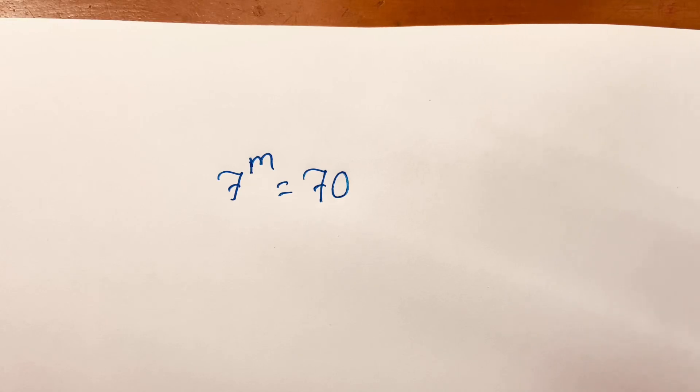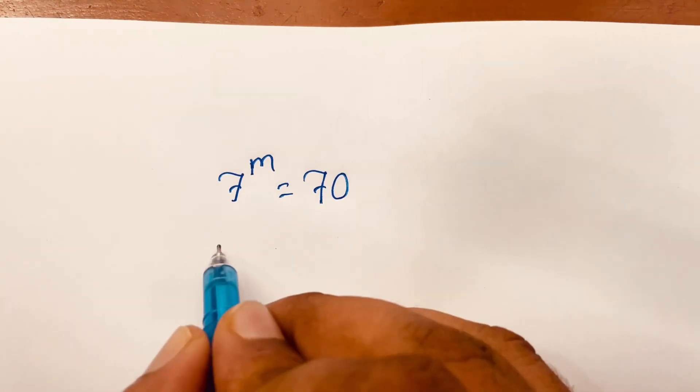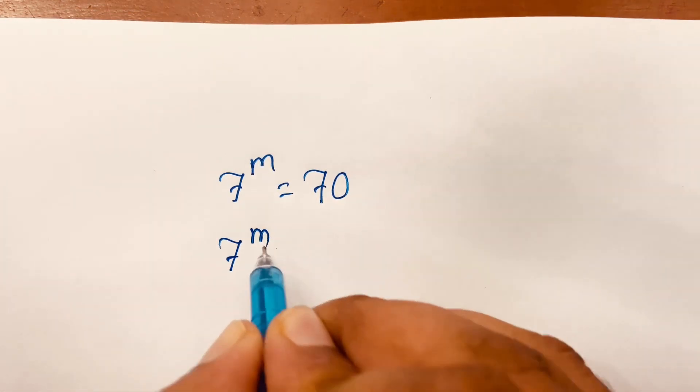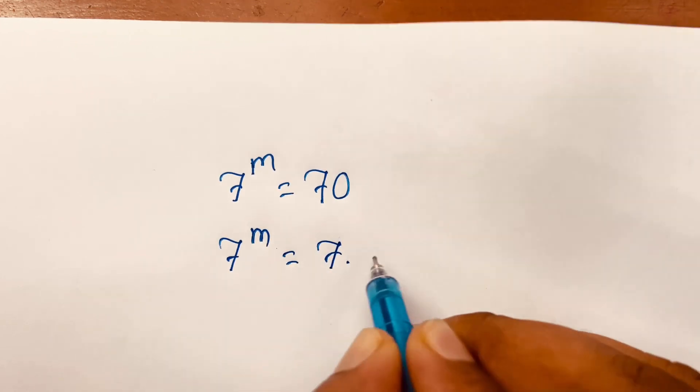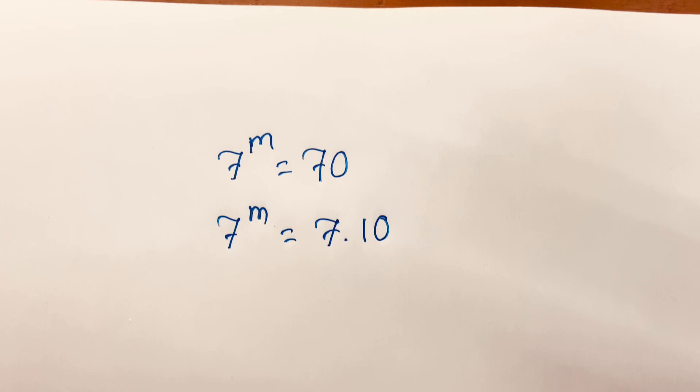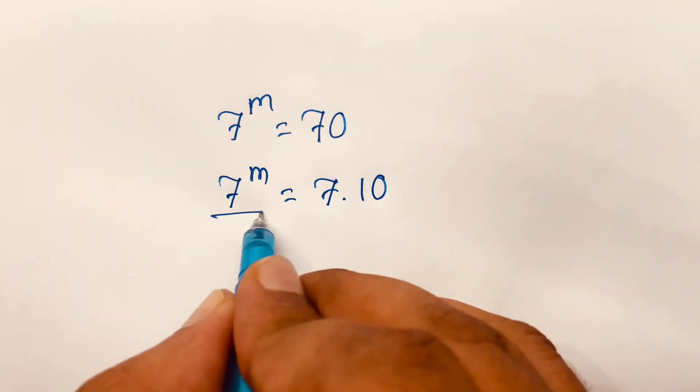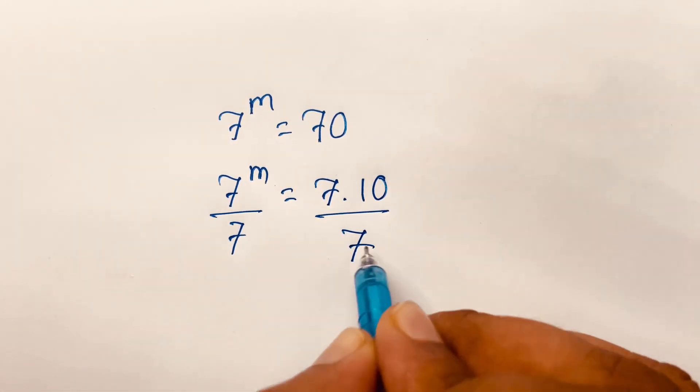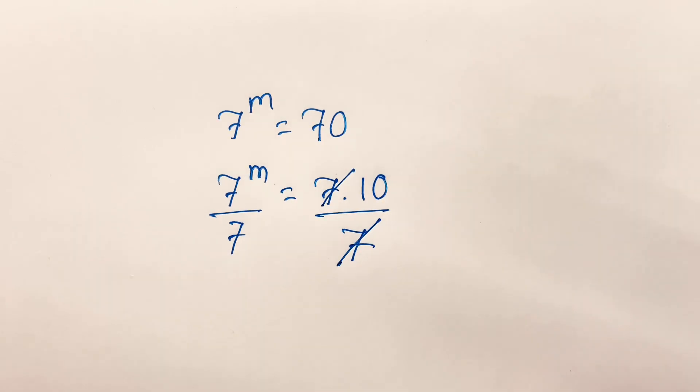To solve 7^m = 70, we'll find the value of m in this equation. First, 7^m = 7 times 10, which equals 70. Then I divide both sides by 7, so 7 cancels.